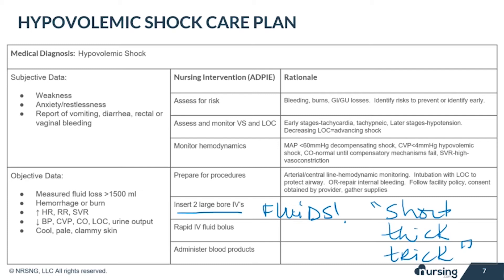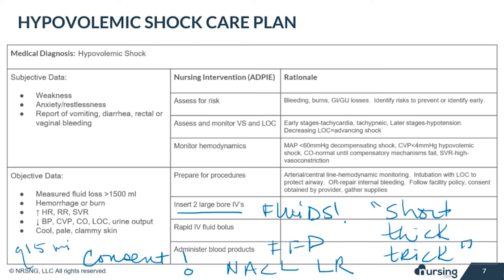Crystalloids like normal saline and lactated ringers are used to replace fluid loss from sources other than bleeding or hemorrhage. Colloids are used to replace lost volume from hemorrhage, with administration of blood products like packed red blood cells and fresh frozen plasma. Consent must be obtained for blood administration, with the patient understanding possible reactions. Send a type and crossmatch to determine the patient's blood type. Before administration, blood must be checked with another RN. Monitor using your facility's protocol — usually every 15 minutes times 2, every 30 minutes times 1, and every hour after that. In hypovolemic shock, even blood products are given rapidly.